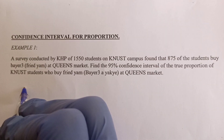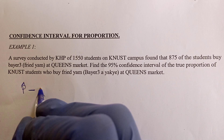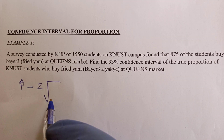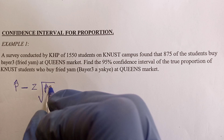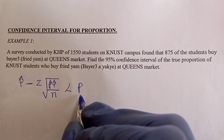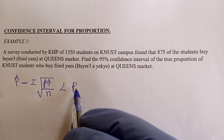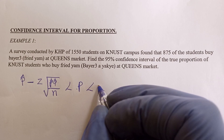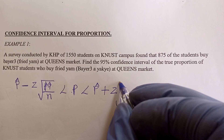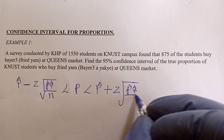To do that, this is the formula you are going to use: p̂ minus z times the square root of p̂ times q̂ all over n, less than p, less than p̂ plus z times the square root of p̂ times q̂ over n. Here p is the population proportion you want to estimate.